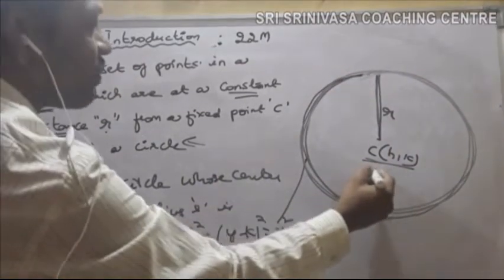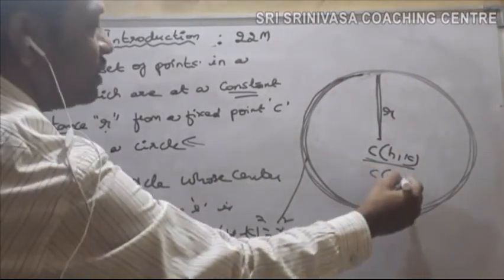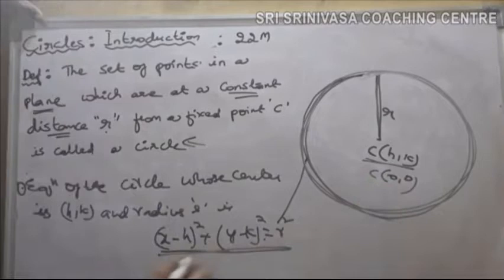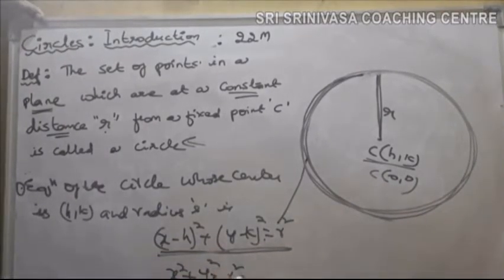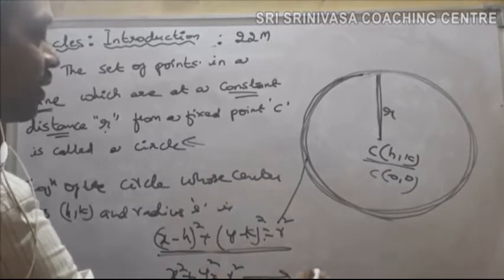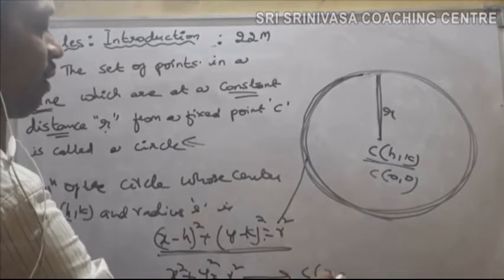If the center is the origin, then instead of this formula you can use x square plus y square equal to R square.